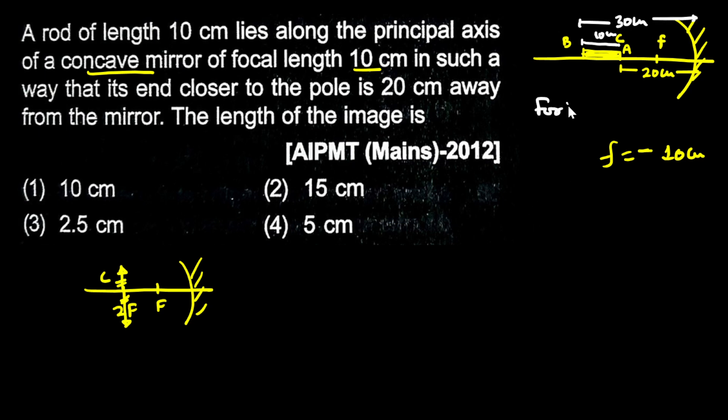I'm talking about point B. Where is the image from point B? Point B is at 30 cm, so U equals minus 30. Point A will form an image and point B will form an image.